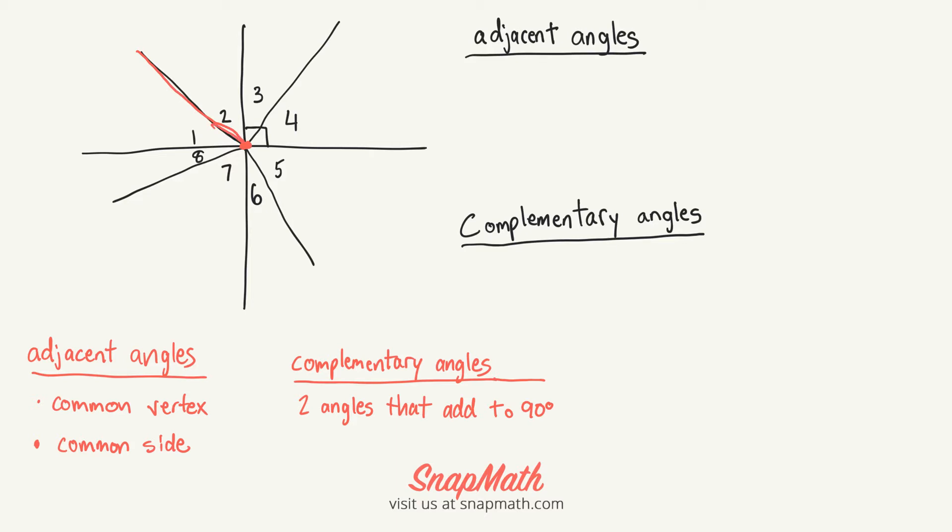So 1 and 2 are adjacent. And then 2 and 3 are adjacent as well. 3 and 4 are adjacent. 4 and 5 are adjacent. And you can go all the way around, and any two angles that are next to each other with a common vertex and a common side are adjacent.